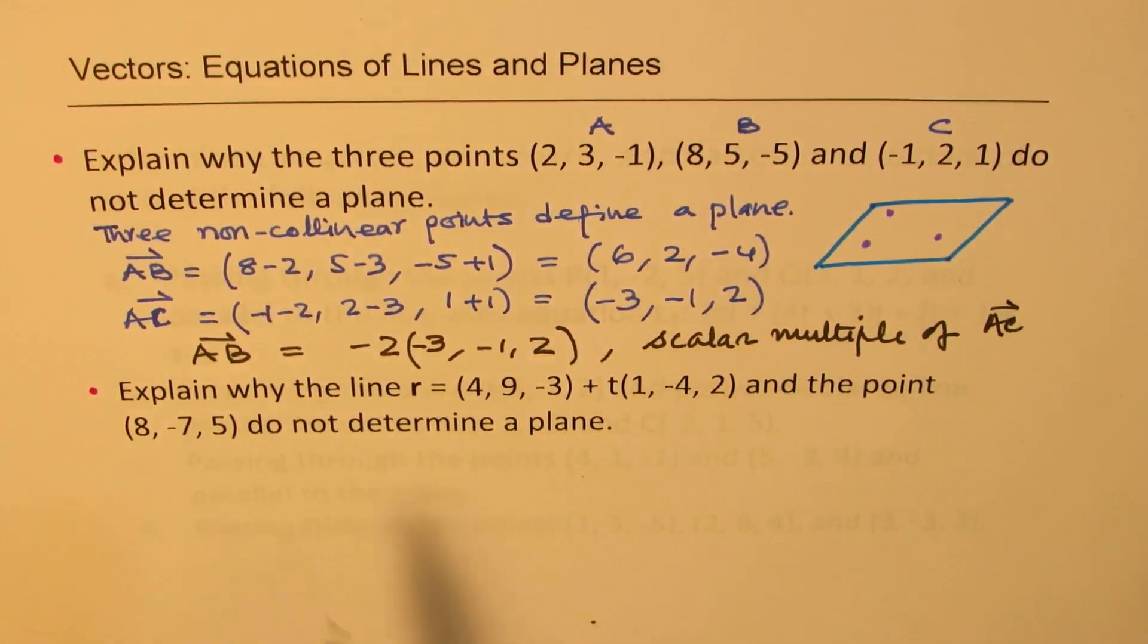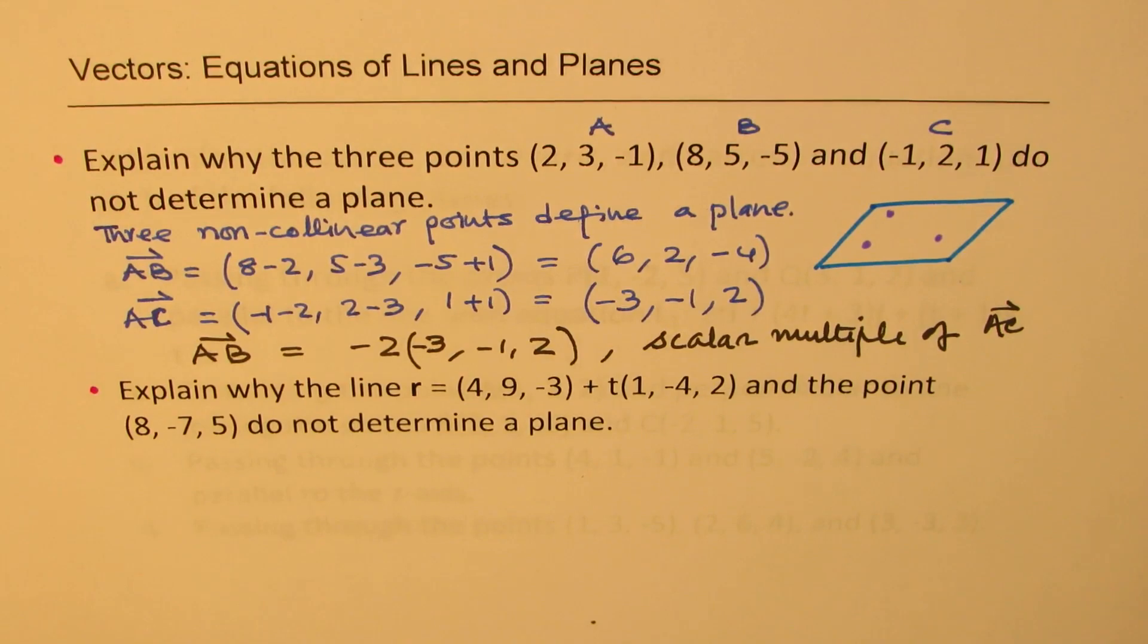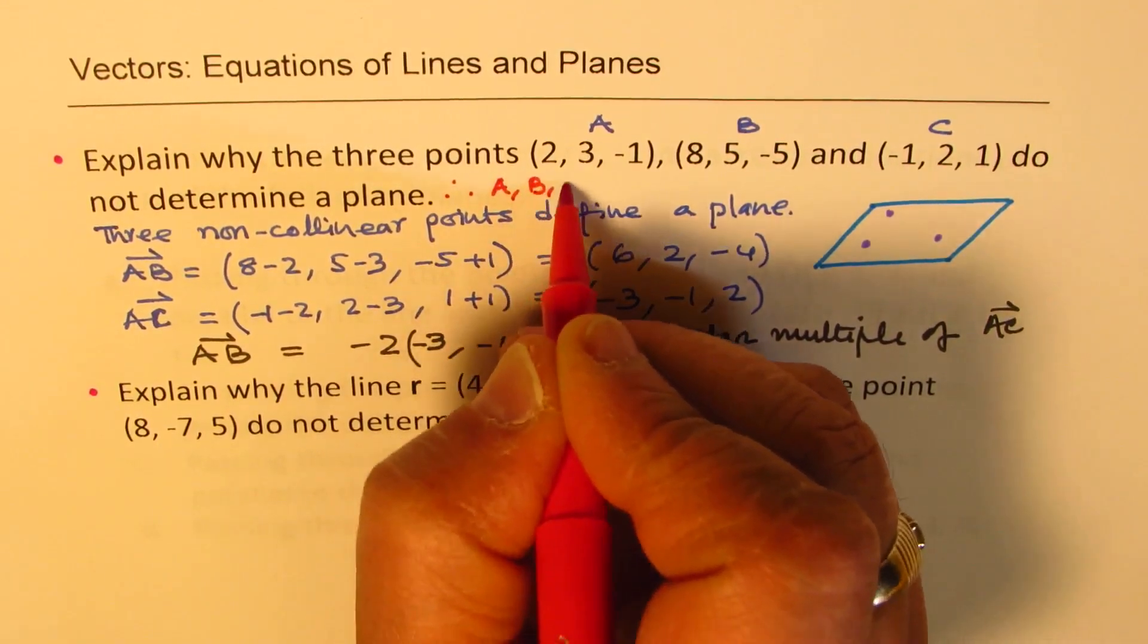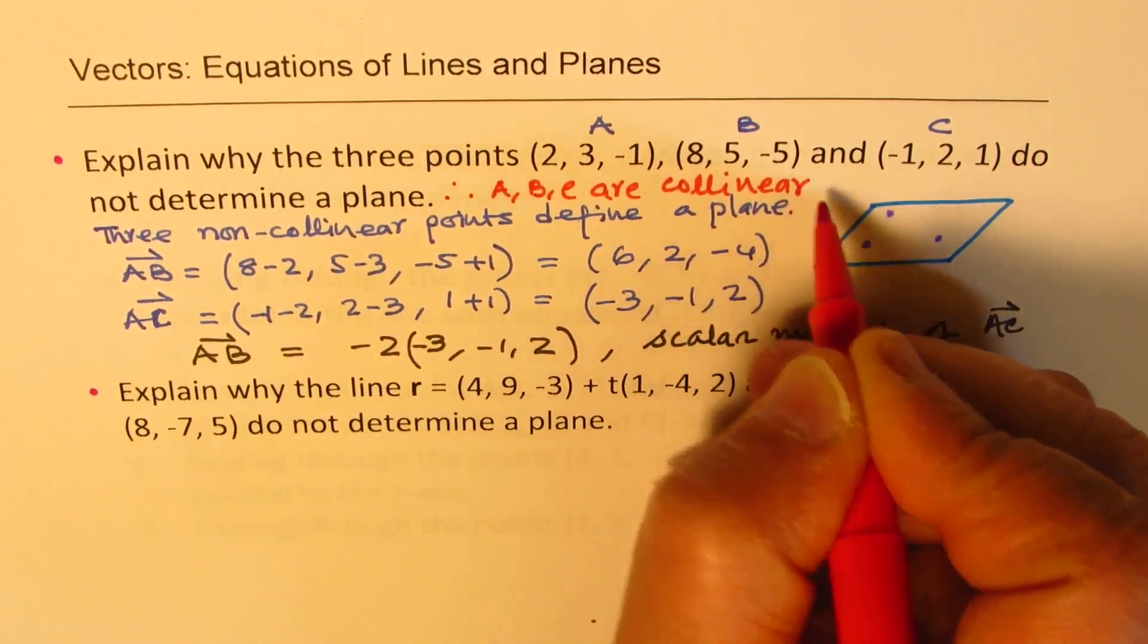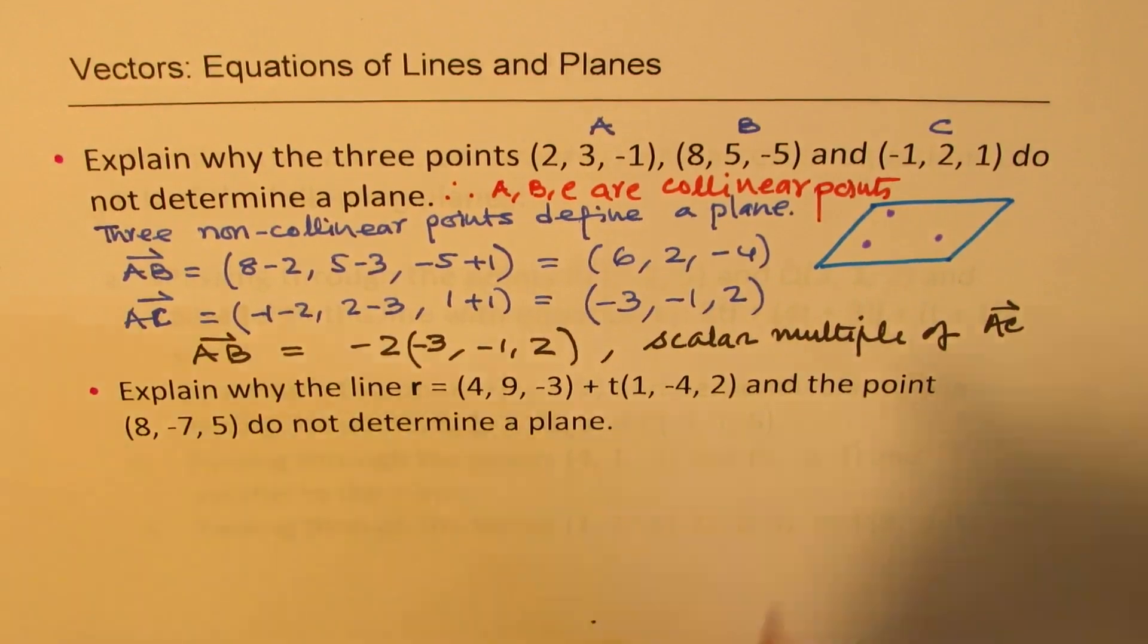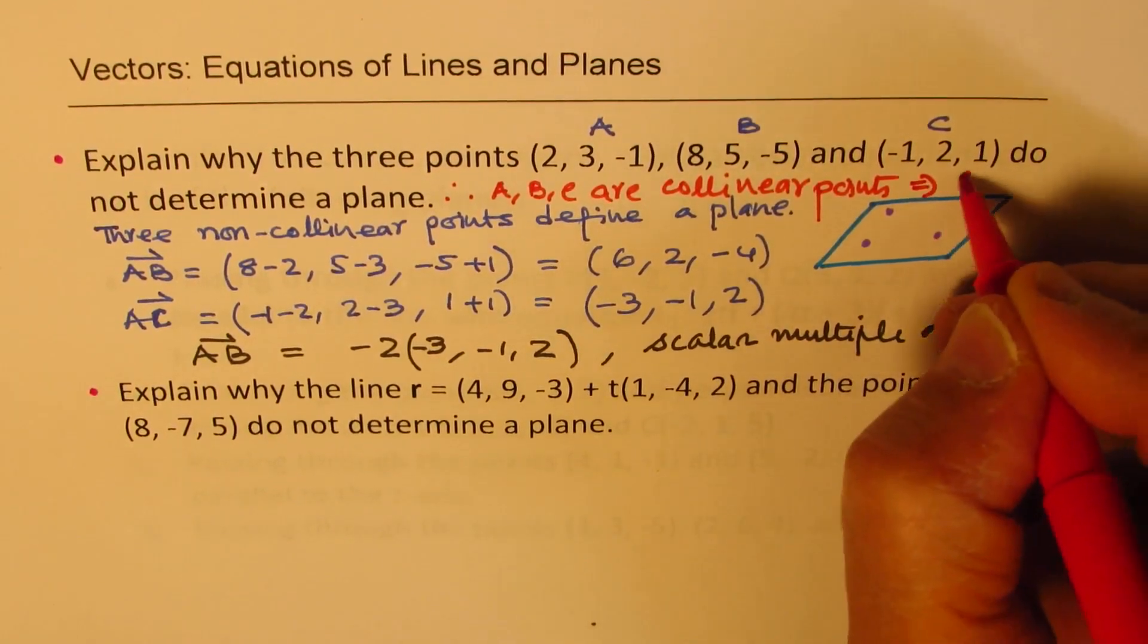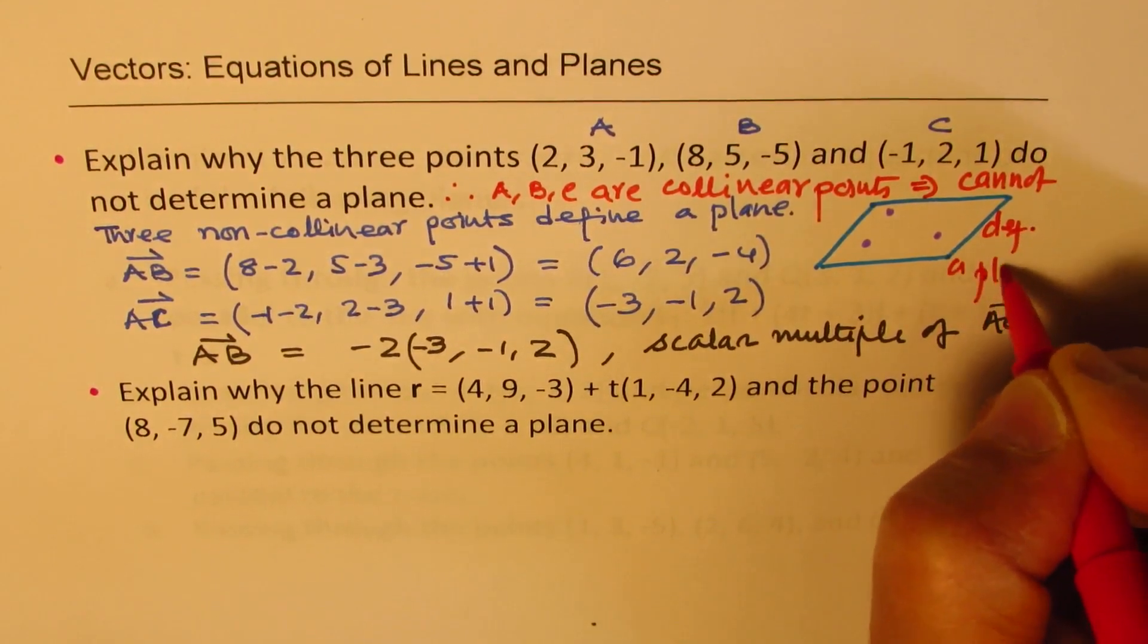So we get this direction. What do you notice? You notice that AB is basically equal to -2 times (3, -1, 2). So that means it is scalar multiple of AC. Now since it is a scalar multiple, we say that the points are collinear points. Therefore, ABC are collinear points. And so they cannot define a plane.